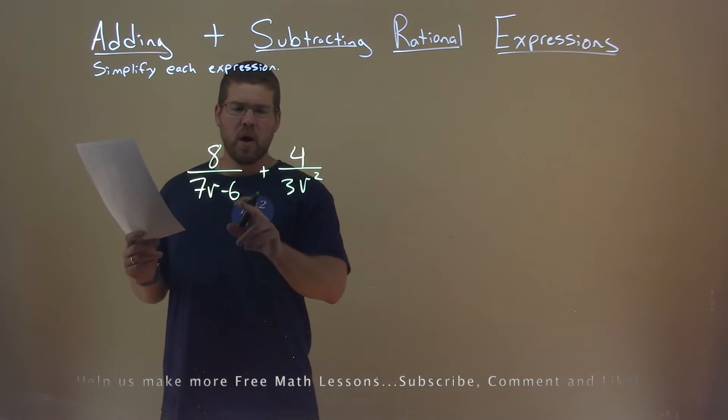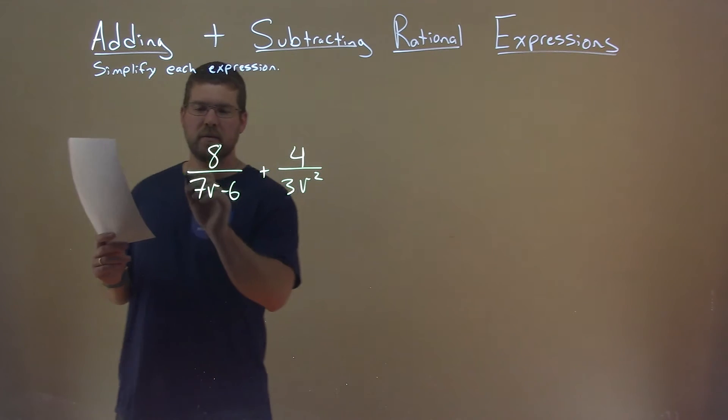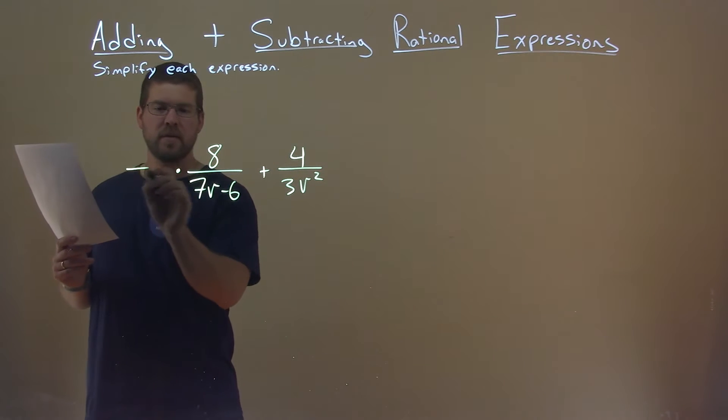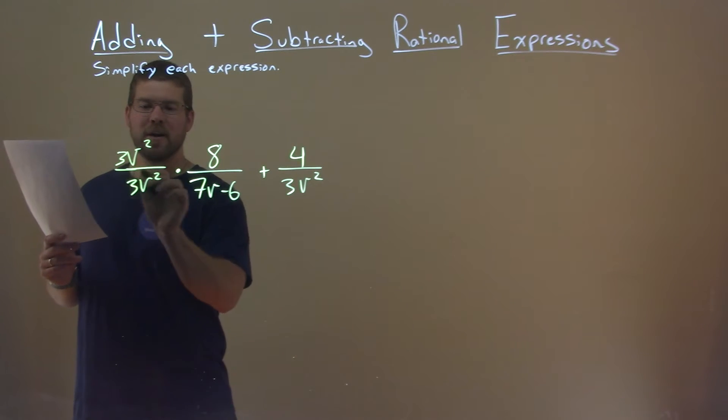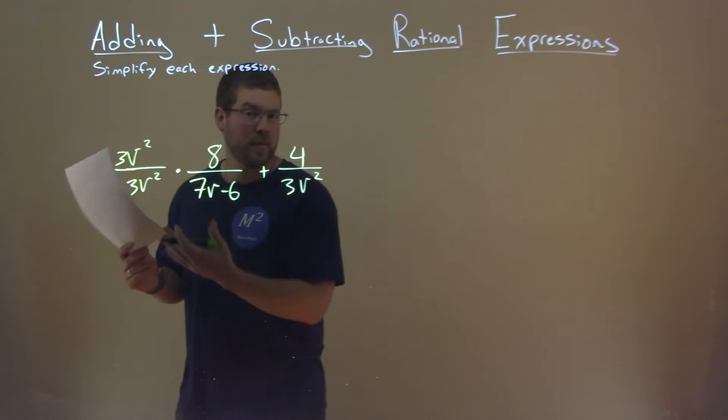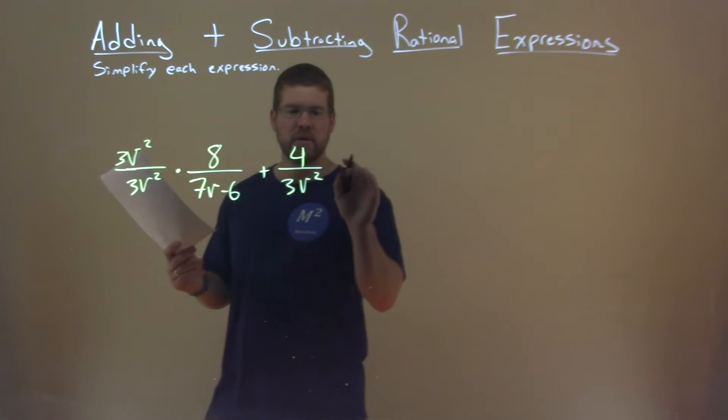Well, I want to have a common denominator, so an easy way to do that is take this side, the left side, and multiply by this denominator over itself. 3v squared divided by 3v squared is just 1. Doesn't really change it much.